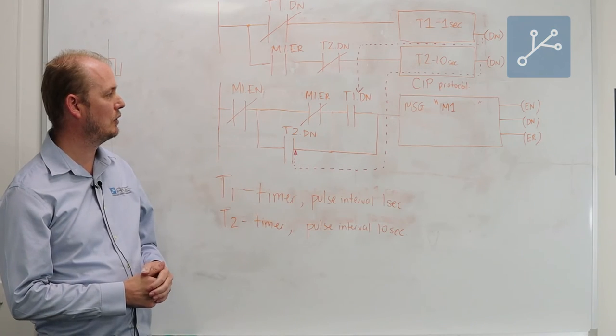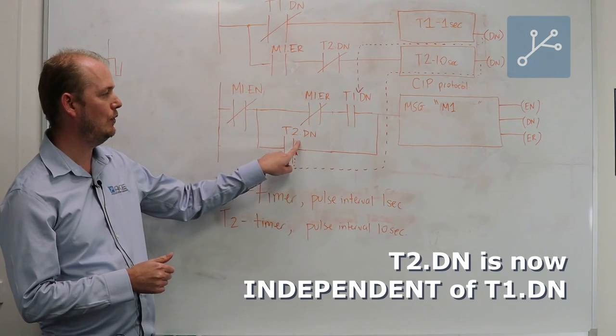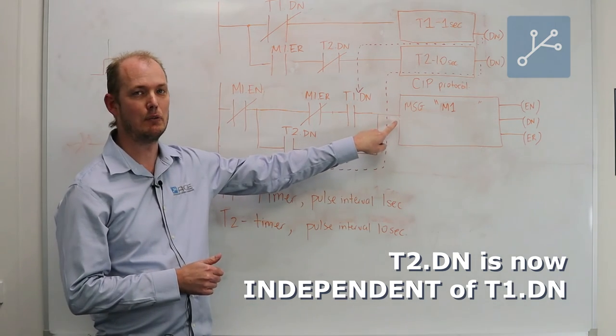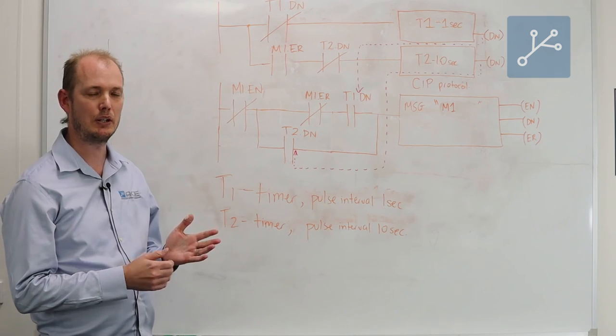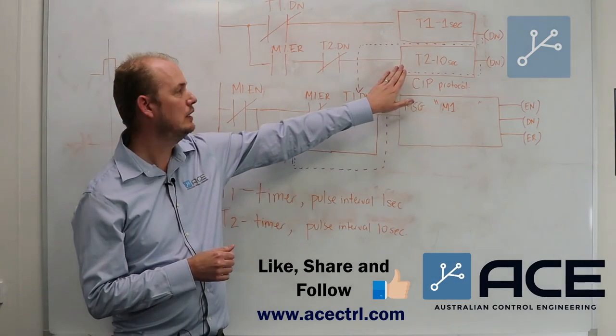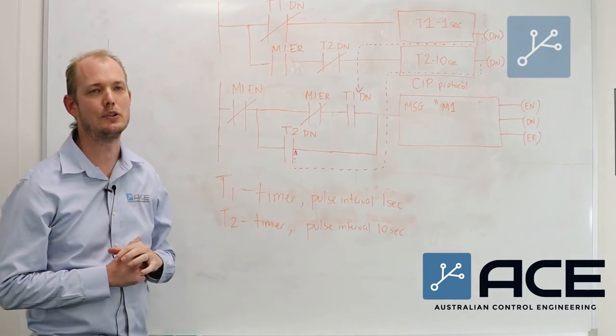So then when there is an error with the message instruction, T2 will separately control the re-execution of the message instruction. Once the message instruction is back to a healthy state, then timer 2 will no longer be needed and timer 1 will again control the execution of the message.